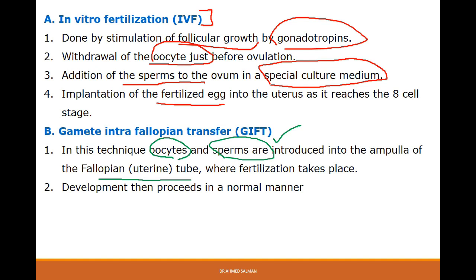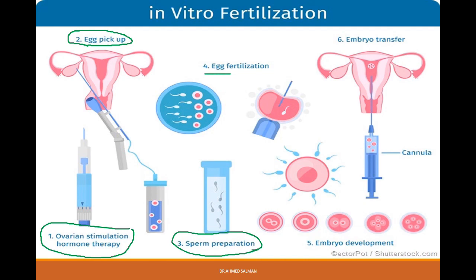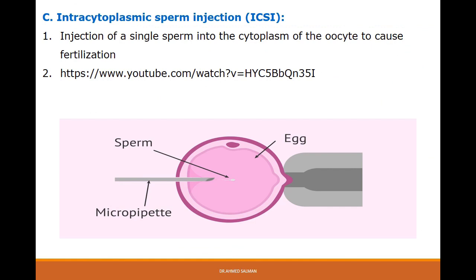The IVF procedure involves ovarian stimulation by hormone therapy to develop follicles, then pick-up of the ovum from the ovary. Sperm preparation is done outside the body, then the sperm and ovum are added together to achieve fertilization. The embryo is then developed until the 8-cell stage, after which it is injected into the uterus to complete the pregnancy. Another method is intracytoplasmic sperm injection — the injection of a single sperm into the cytoplasm of the oocyte to cause fertilization.